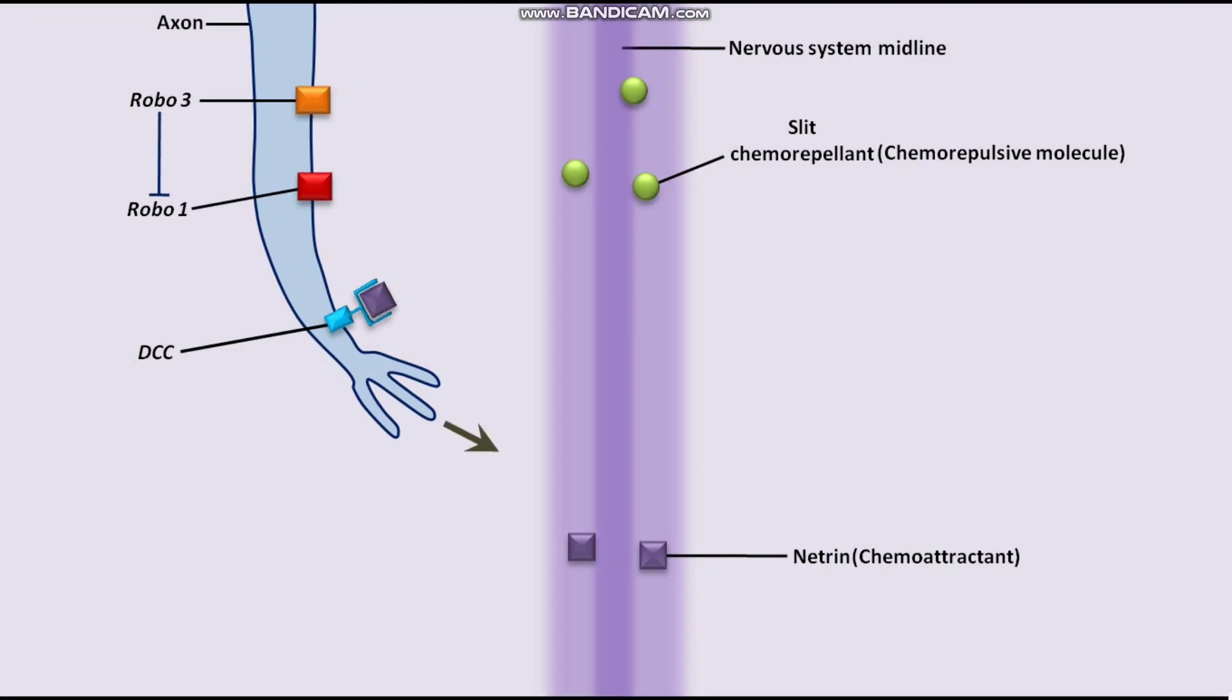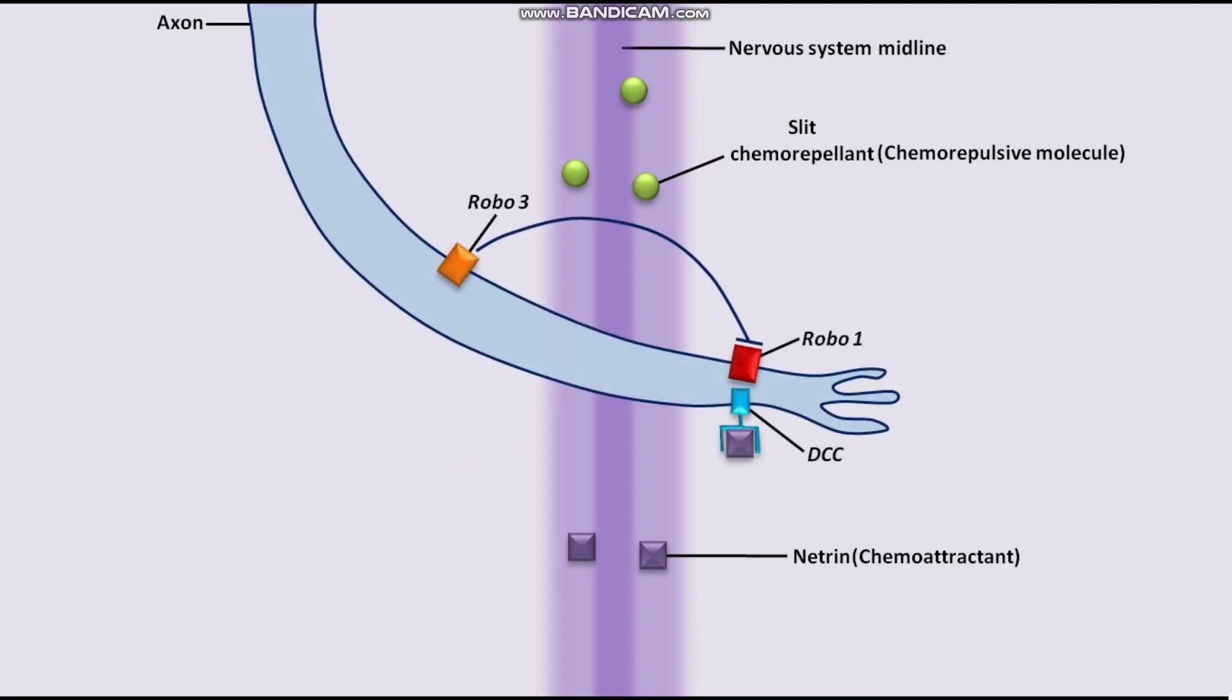Due to this extension, the growth cone crosses the midline. After that, Robo1 protein is upregulated, meaning the expression of Robo1 protein is increased, and the DCC protein is downregulated, meaning the expression of DCC protein is decreased.